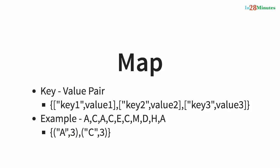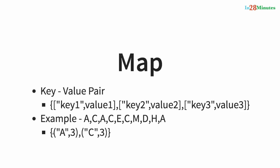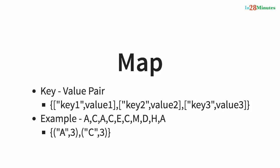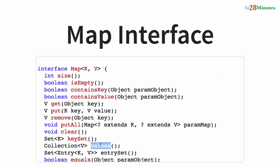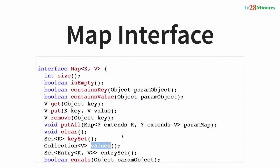You can remove a specific key, which removes the entire entry. You have methods like putAll(), clear() to empty the collection, and containsKey(). You can get the keys as a set using keySet() — so you get a set of 'a', 'c', and other keys. You can also get a collection of just the values using values().